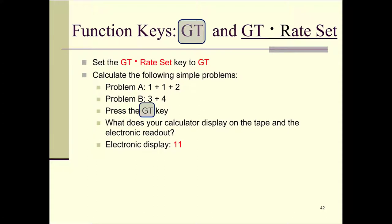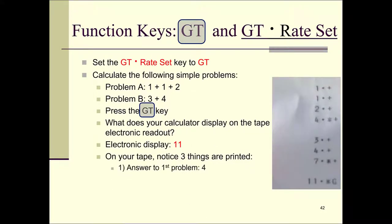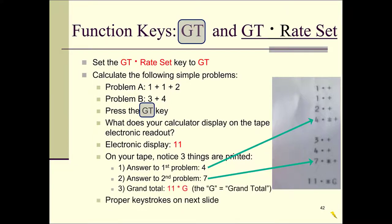On your tape, notice you have three things printed: the answer to the first problem, four, and the answer to the second problem, seven — that's the same as before. But now you've got this grand total answer on your tape and it looks like '11 asterisk G'. The G stands for grand total, so '11 asterisk G' means the grand total of those two problems is 11. I'll show you the exact keystrokes on the next slide.